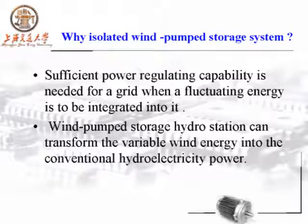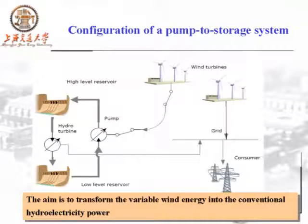As is well known, sufficient power regulating capacity is needed for a grid when fluctuating energy is integrated into it. If the system capacity is limited, an effective way to employ wind energy is to transform it into conventional hydroelectric power through a pump storage system. The aim of our research is to transfer variable wind energy into conventional hydroelectric power.